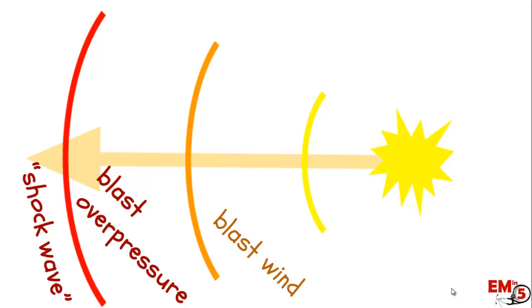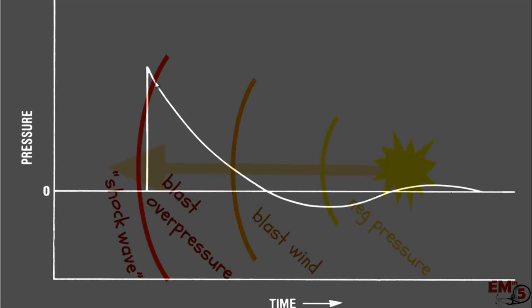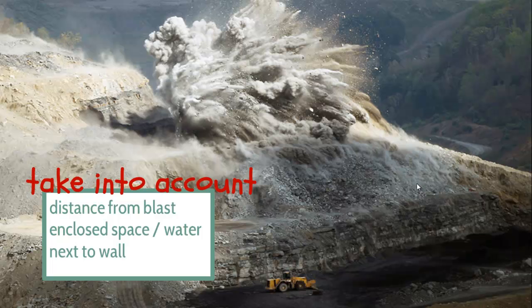Then you get a blast wind, which is essentially just a huge gust of air. And then lastly, you have this negative pressure. If we were to graph this all out, it would look something like this: first you have this huge spike — that's your shock wave or blast overpressure — then you have a blast wind, which is followed by this little bit of negative pressure dip. A couple of things you have to take into account when thinking about how much injury you might see from your blast.